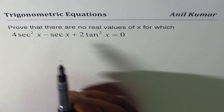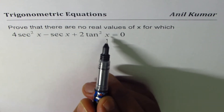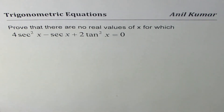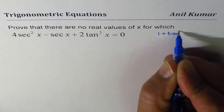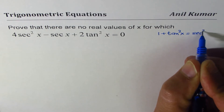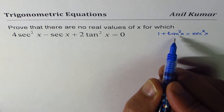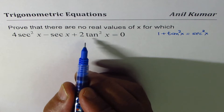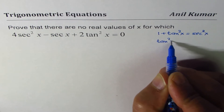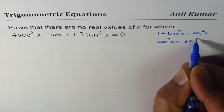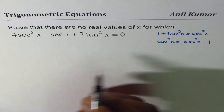It's kind of a quadratic equation in secant. We can always write tan²x in terms of sec²x using the identity 1 + tan²x = sec²x. So I can rewrite this as tan²x = sec²x minus 1, and replace tan²x in the given equation.